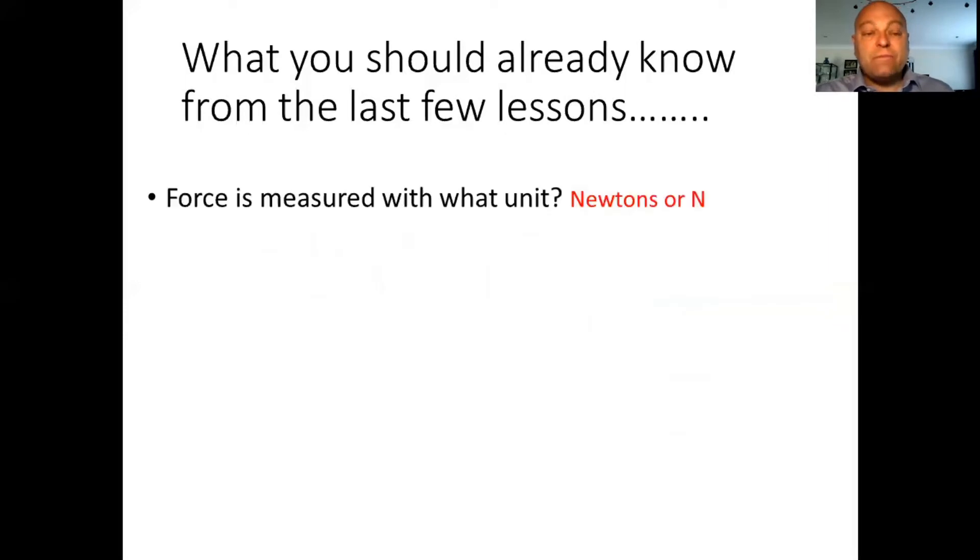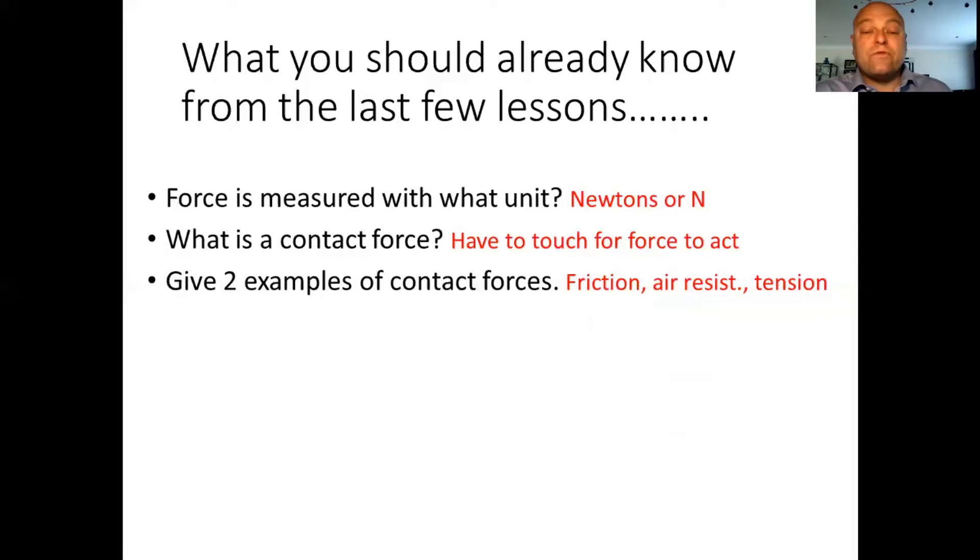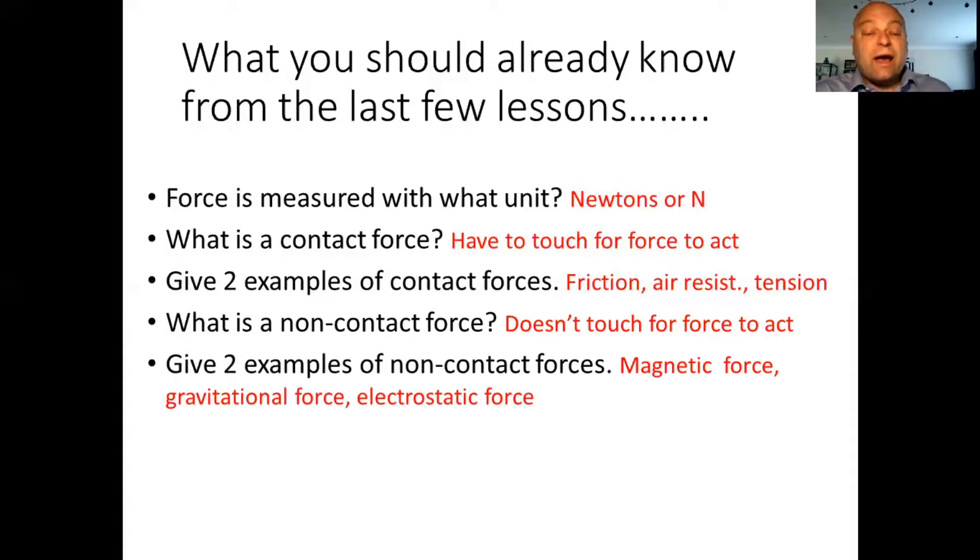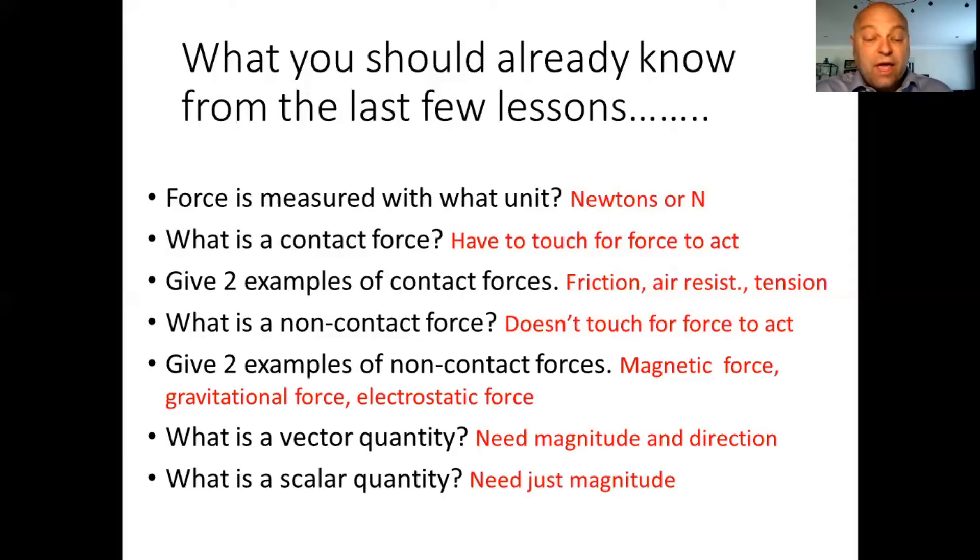Let's see how you got on then. First question: force is measured with what unit? It's measured in Newtons or capital N. Little n is not correct here, it means something different. Contact force, the key bit here, something has to touch for the force to act. Two examples of contact force are things like friction, air resistance, and tension. Non-contact force, something doesn't have to touch for the force to act. So no touching is required. Examples can include magnetic force, gravitational force, and electrostatic force. As I said in previous lessons, just saying a push or a pull is not good enough for this. The word pull doesn't distinguish between contact and non-contact force, so it would be wrong. Vector quantity, it's a quantity where you have magnitude, which is size, and direction. And the scalar quantity just has magnitude or size. If you got all of those right, well done.